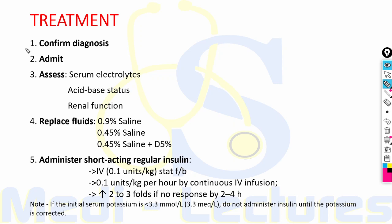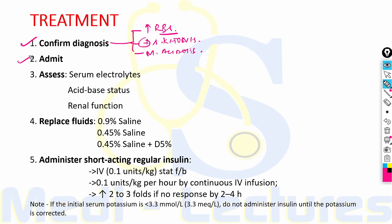For treatment, first confirm the diagnosis: increased plasma glucose more than 250, presence of serum or urine ketones, and presence of metabolic acidosis. Admit the patient; intensive care may be necessary for frequent monitoring, or if the patient has severe acidosis (pH less than 7) or is unconscious — severe acidosis and unconsciousness require ICU admission.